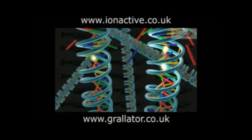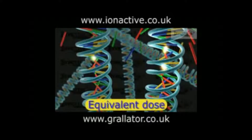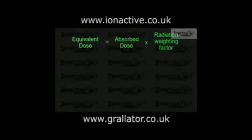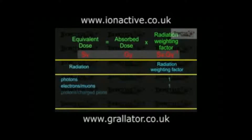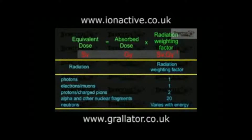This leads to the concept of an equivalent dose, which is a measure of the biological damage and consequential risk of detrimental effects inflicted by ionising radiation. To obtain the equivalent dose, the absorbed dose is multiplied by a radiation weighting factor that accounts for its effect on biological tissues. The unit of equivalent dose is the sievert. To obtain an equivalent dose of one sievert requires an absorbed dose of one grey of gamma radiation, one grey of beta radiation, or one twentieth of a grey of alpha radiation, as alpha radiation is 20 times more damaging.